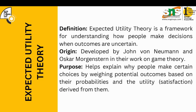This theory was developed by John von Neumann and Oscar Morgenstern in their work on game theory. It helps explain why people make certain choices by weighing potential outcomes based on their probabilities and the utility derived from them. The authors made an attempt to explain how choices are made despite consequences being uncertain — how choices are made just out of what somebody is expecting something to turn out to be. It is purely based on expectations and probabilities, but the decisions have a significant impact on investments.